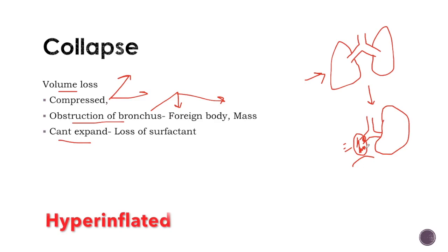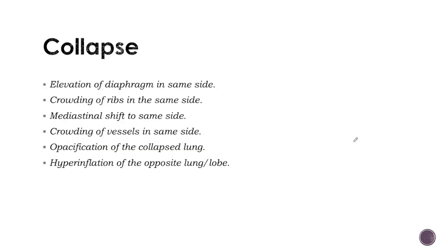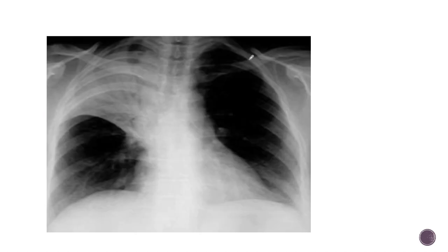The ribs on the same side will be crowded, and the opposite lung appears hyperinflated to compensate for the volume loss. The features of collapse are: elevation of the diaphragm on the same side, crowding of ribs on the same side, mediastinal shift towards the same side, crowding of vessels on the same side, opacification of the collapsed lung, and hyperinflation of the opposite lung or lobe.